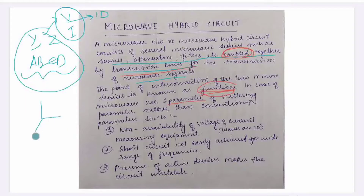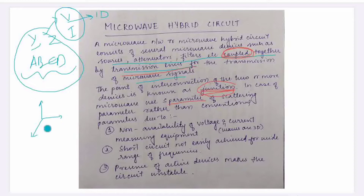Microwave is 3D. Why? Because there are 3 axes: one axis has the electric field, one axis has the magnetic waves, and the third axis has wave propagation. So microwave is a 3D wave, and this 3D wave cannot be defined by 1D characteristics.